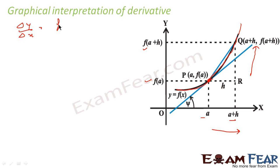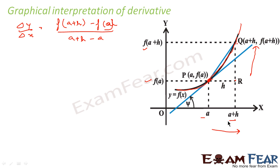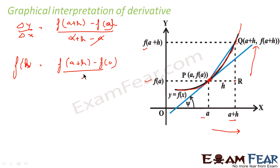That is nothing but change in y, which is f of a plus h minus f of a. This is the change in y: y is f of a here, and f of a plus h there. From here to here, the change in y is f of a plus h minus f of a. And the change in x is nothing but a plus h minus a. So we can say that the derivative f dash at point a is nothing but f of a plus h minus f of a divided by h.